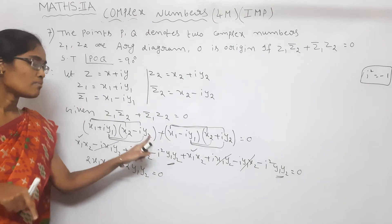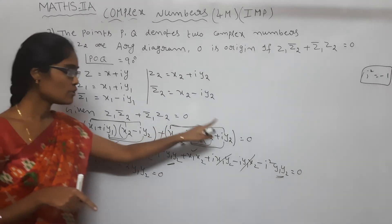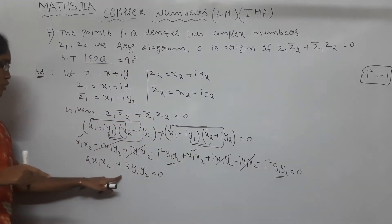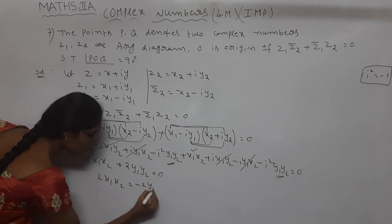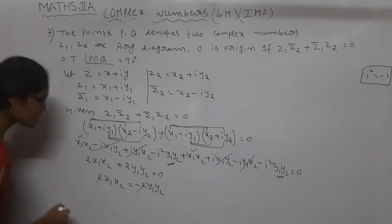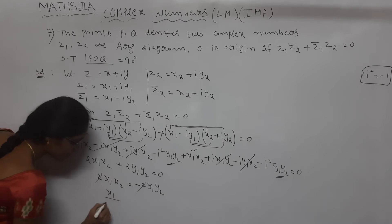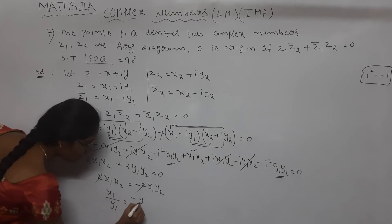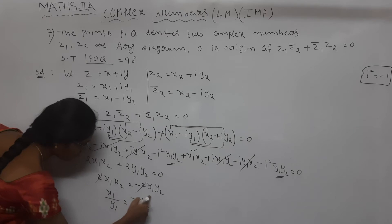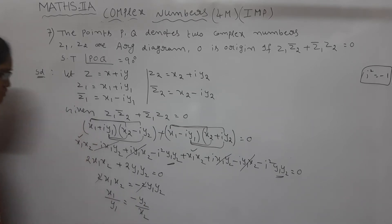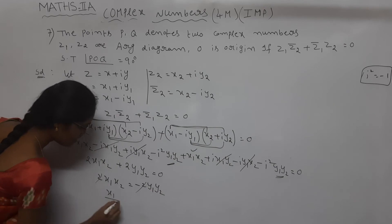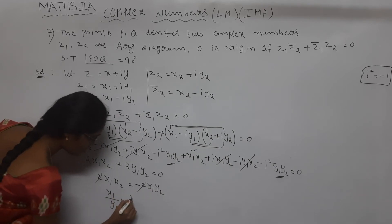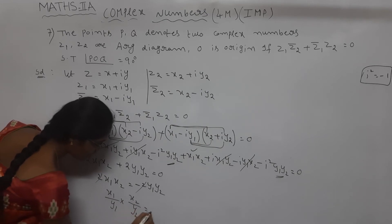So 2 into X1X2 plus 2 into Y1Y2 is equal to zero. Two gets canceled. So 2 into X1X2 is equal to minus 2 into Y1Y2. Two gets canceled. X1 by Y1 is equal to minus of Y2 by X2. So X1 by Y1 into X2 by Y2 is equal to minus one.